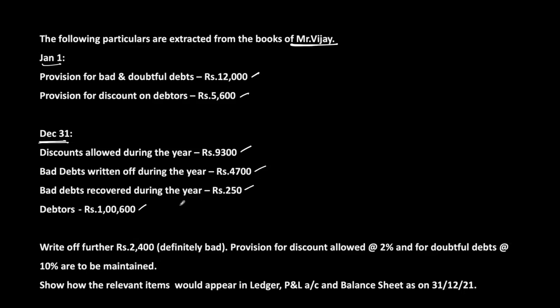The closing debtors position is given. Write off further 2,400 as definitely bad. Provision for discount allowed at 2% and for doubtful debts at 10% are to be maintained. Show how the relevant items would appear in the ledger, P&L and balance sheet as at 31st December 2021.